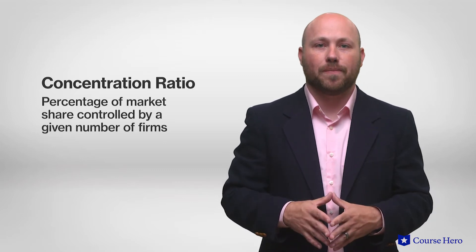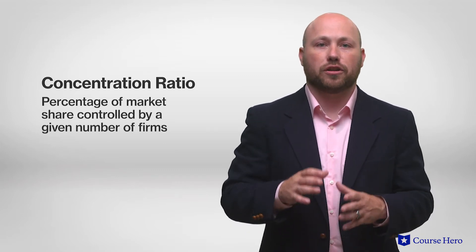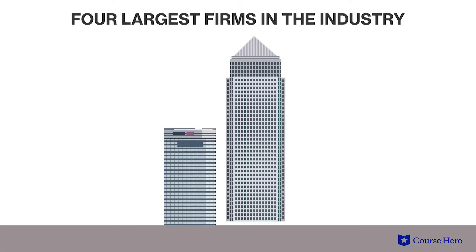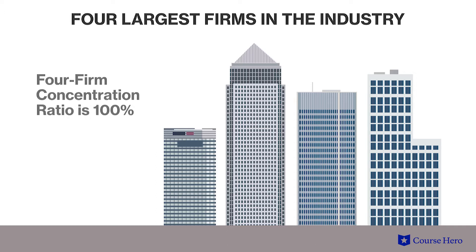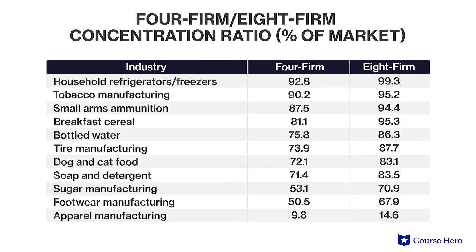Economists measure the degree to which oligopolistic firms dominate a market with a concentration ratio, which is the percentage of market share controlled by a given number of firms. For example, a four-firm concentration ratio is the share of the total market held by the four largest firms in the industry. If there are only four firms in that industry, the four-firm concentration ratio is 100% and would be considered highly concentrated. Here are some examples of oligopolistic industries and their four-firm and eight-firm concentration ratios.